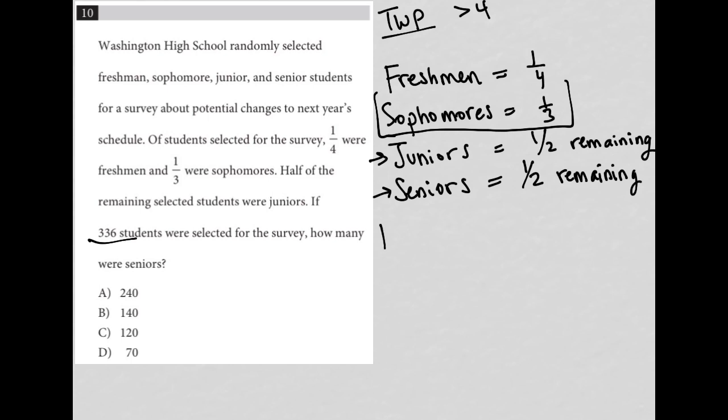So we know that the freshmen, which I'll just call F, were equal to one fourth of the 336. So let's put that in the calculator and see what we get out. So 336 times a fourth, that's 84. So we know that 84 students were freshmen. And then we know sophomores, which I'll just call SO, were one third of the students selected. So one third of 336, and that's going to equal 112.